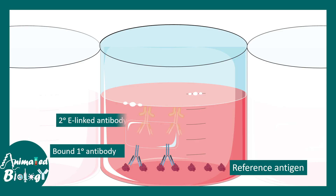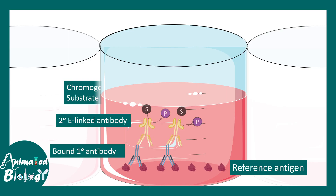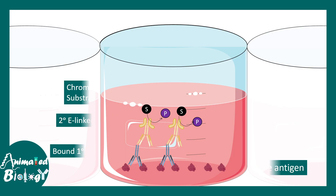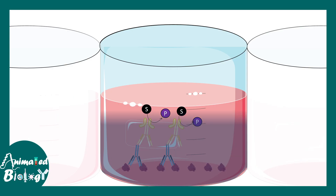Then secondary enzyme-linked antibodies are added, followed by a chromogenic substrate which produces a colored product. A color reaction develops in these wells and one can detect this color reaction.